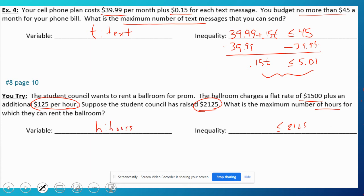So it costs $125 for every hour, plus no matter what, just for renting, it costs $1,500. So subtract $1,500.